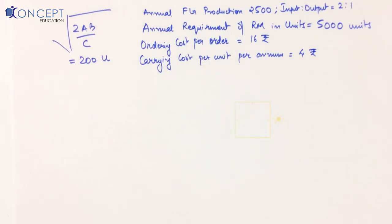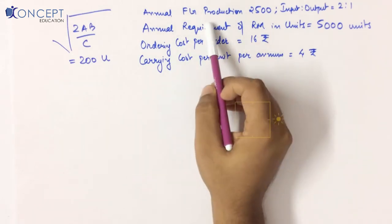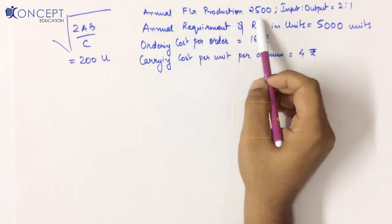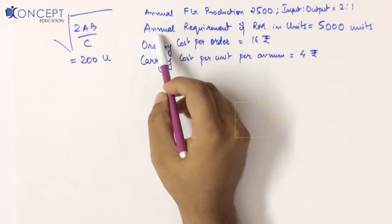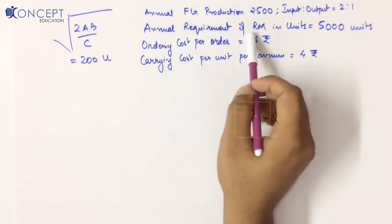What was our sum? Our sum was that the annual requirement of finished goods is 2500. But we are not concerned about that. We want the annual requirement of raw material — that is a very big twist. Remember that.